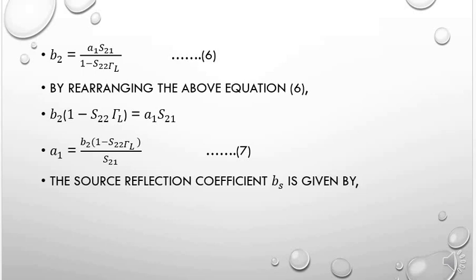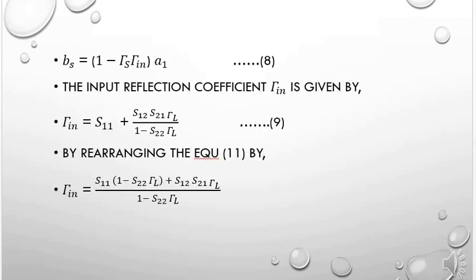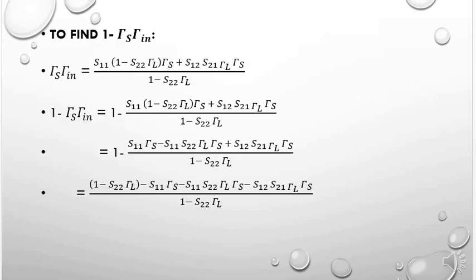The source wave bs is given by bs equals (1 minus gamma_s · gamma_in) times a1. The input reflection coefficient gamma_in is given by gamma_in equals S11 plus (S12·S21·gamma_L) divided by (1 minus S22·gamma_L). Rearranging, gamma_in equals [S11·(1 minus S22·gamma_L) plus S12·S21·gamma_L] divided by (1 minus S22·gamma_L).